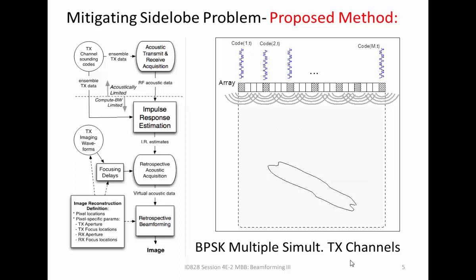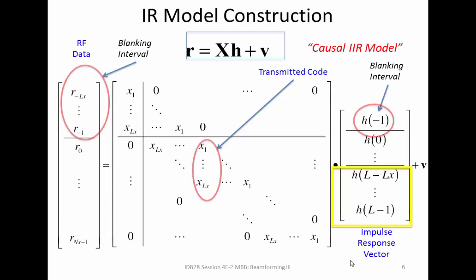We use this as a channel probing sequence and then estimate, using a model-based estimation procedure, all the impulse responses from the transmit to each of the received channels. This could be a sparse transmit or expanded apertures — partially focused or however you would choose. Once we get the impulse responses, we retrospectively use those by transmitting waveforms after the fact, applying transmit beamforming and receive beamforming all within this model.